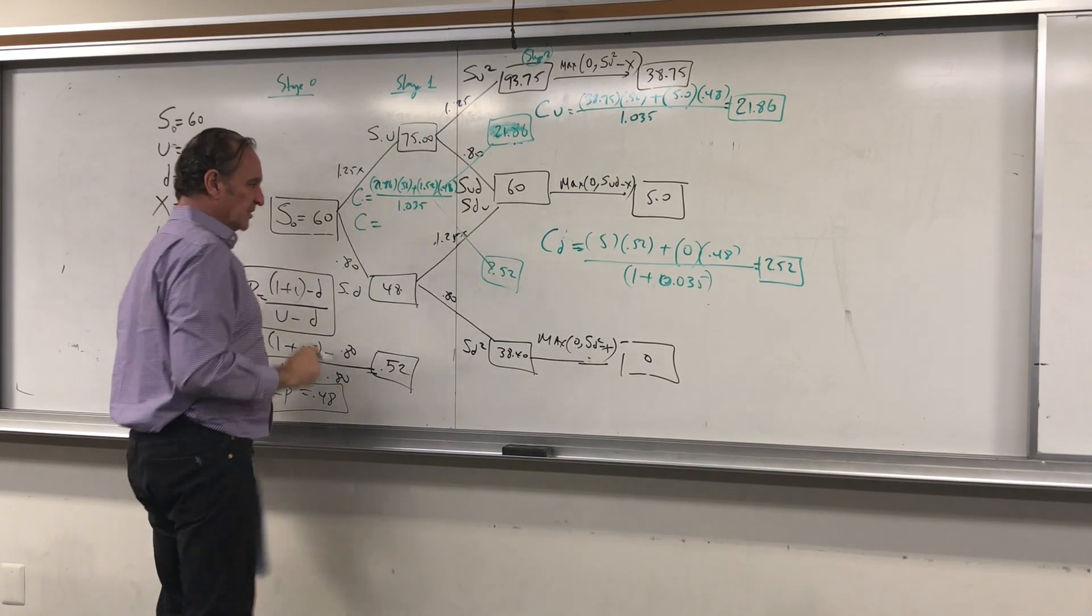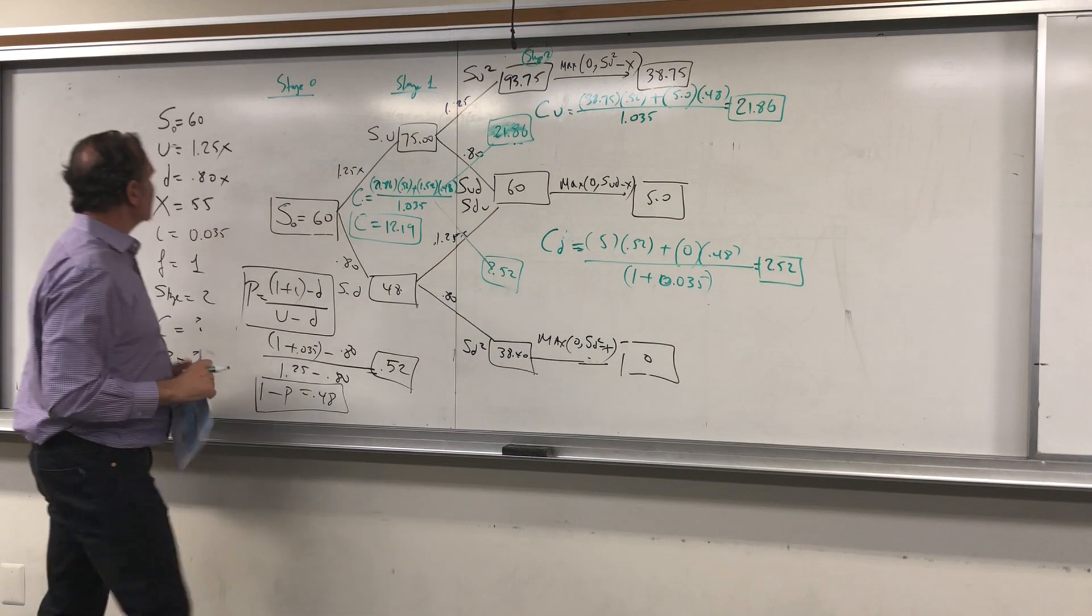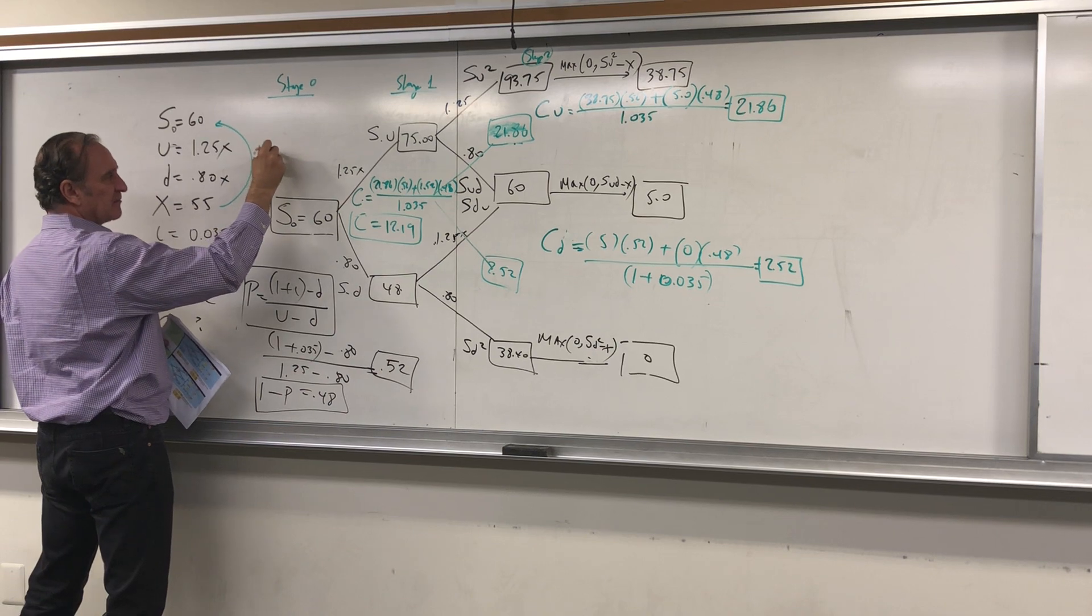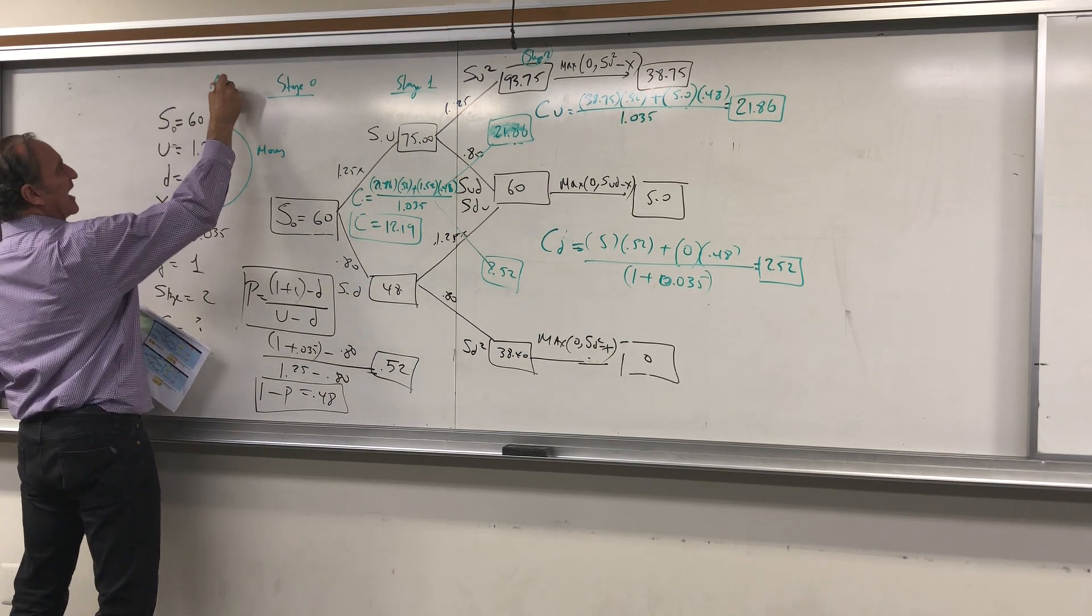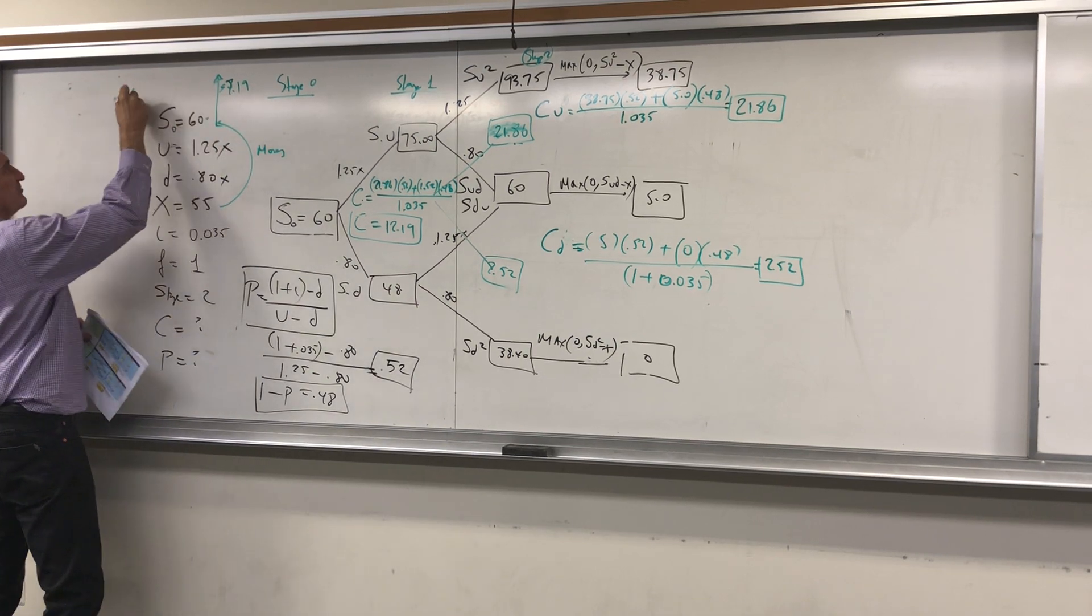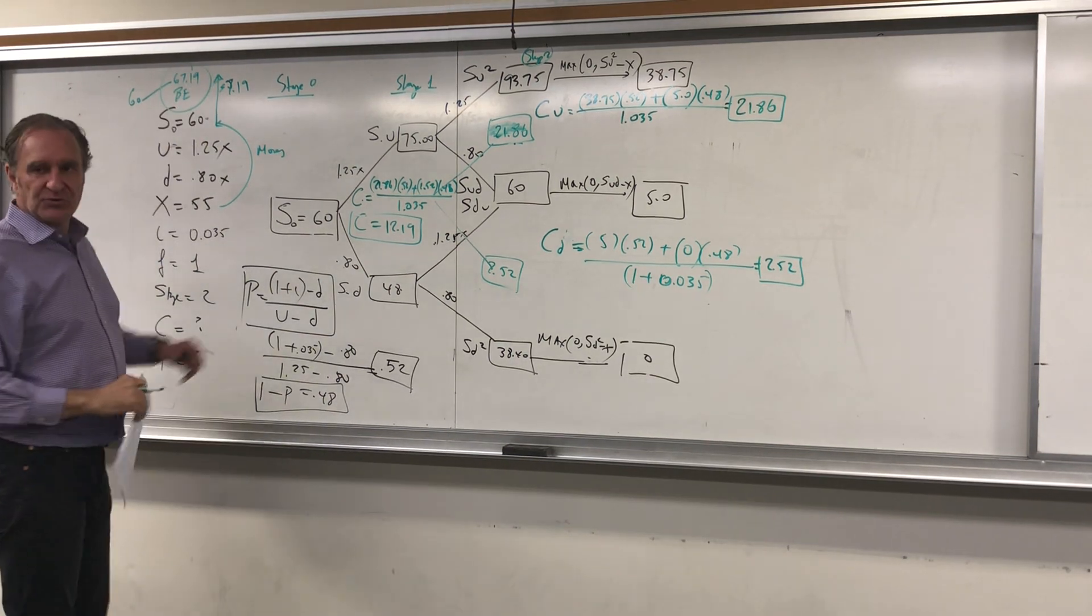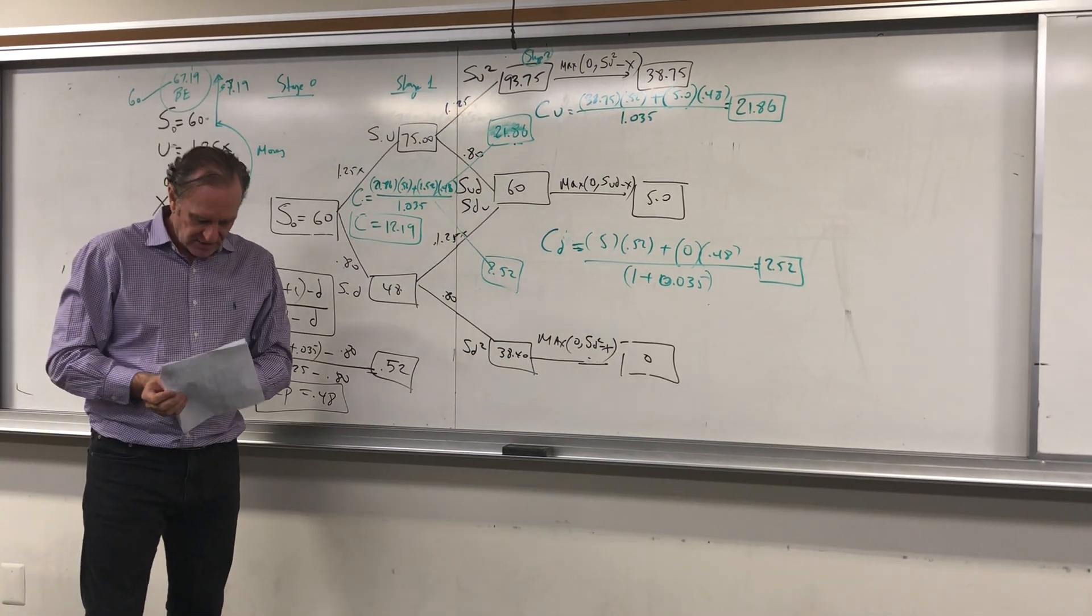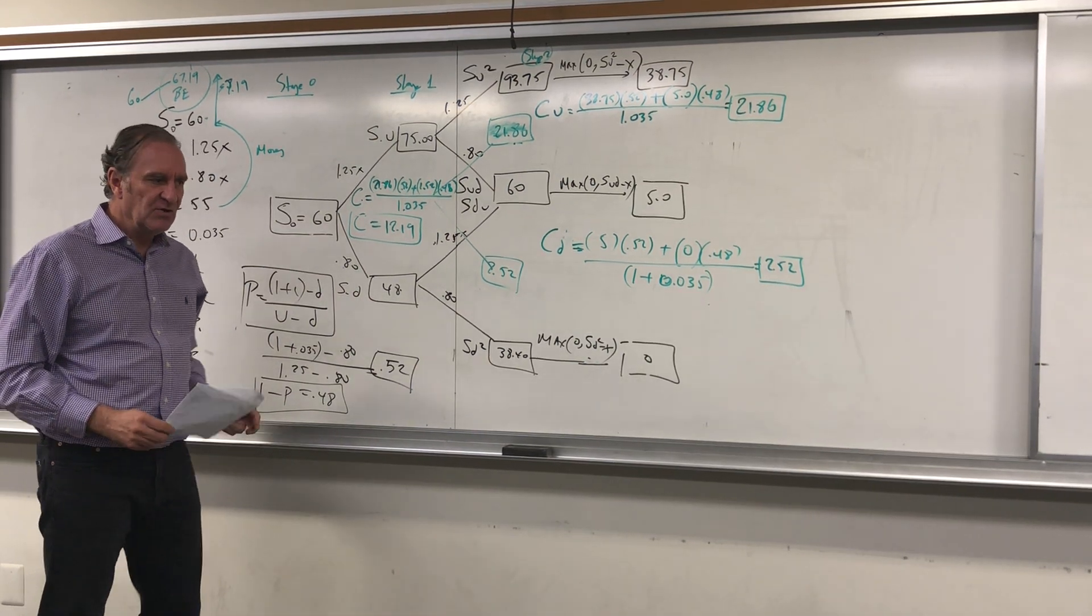Which makes sense, because it needs to be higher than five. You're already in the option, in the money, five dollars. So the stock has to continue going up maybe for another seven dollars and 19 cents more. So the stock has to go from 60 to 67.19—that will be the break-even point for you to meet that threshold. So that's the call option, the call option using the binomial option pricing for two-stage.